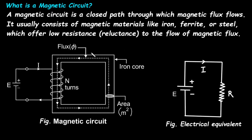Now let's understand the magnetic circuit and its electrical equivalent. This magnetic circuit consists of an EMF or battery. From this battery, we get the current. Here we can see there are a number of turns — this wire is wound on the iron core. Because of this current, it produces magnetic flux. This flux flows in a direction that depends on the direction of the current I.